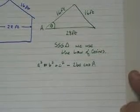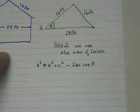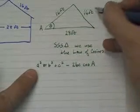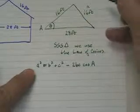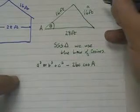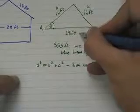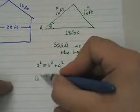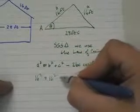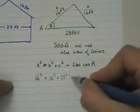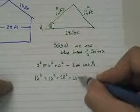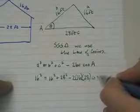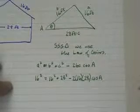Now, plug in what I know. What I know is side a is going to be here, so this will be side a. For simplicity's sake, I'm just going to call this side b and call this side c. So I plug in what I know. 16 squared equals 16 squared plus 28 squared minus 2 times 16 times 28 times cosine of a.